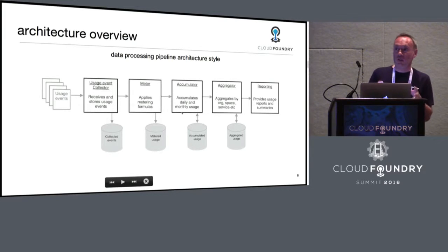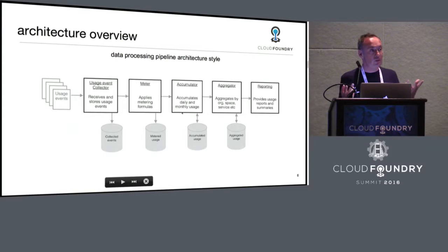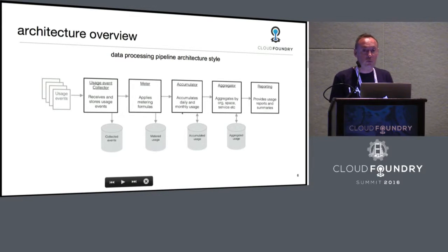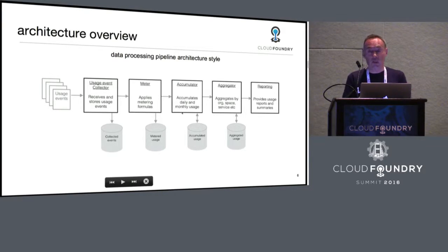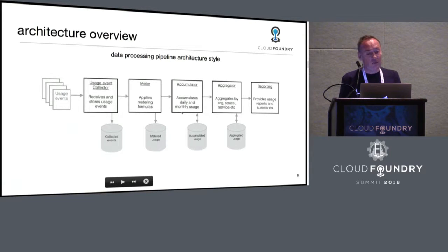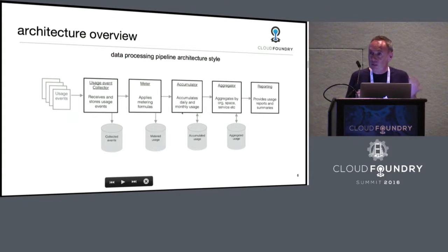Once we have all that information, we apply the metering formulas defined by the service providers. That's the meter service — it turns raw measures into metrics. For an application, the two obvious measures are number of instances and memory per instance; you combine those into a metric like total gigabytes. For a database you might have storage space, number of API calls, and number of databases. The output of that step is what we call metered usage.